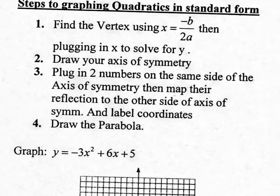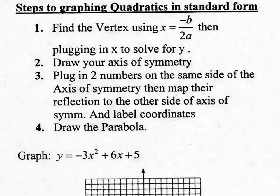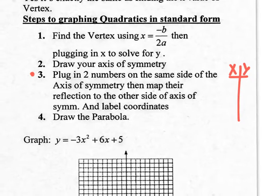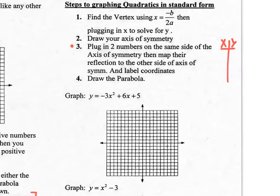Here are the steps to graphing quadratics in standard form. Step 1: find the vertex using X equals negative B over 2A, then plug X into the equation to solve for Y. Step 2: draw your axis of symmetry — a vertical line through the vertex. Step 3: plug in two x-values on the same side of the axis of symmetry using an x-y table. Step 4: draw the parabola after reflecting those points to the other side.